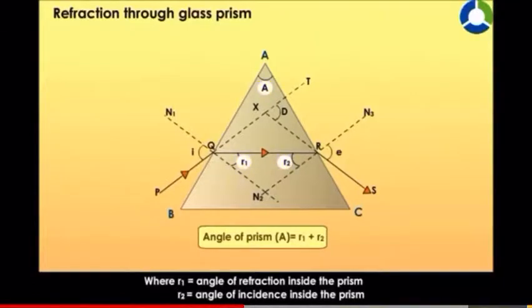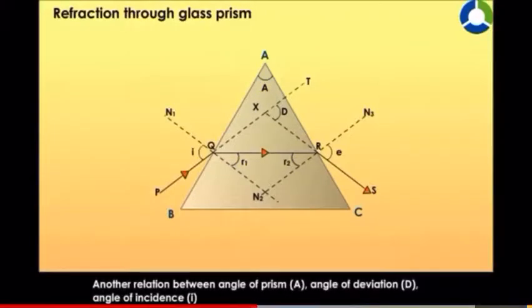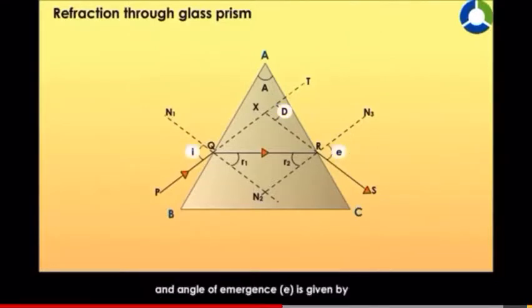equals the angle of incidence inside the prism. Another relation between angle of prism A, angle of deviation D, angle of incidence I, and angle of emergence E is given by A plus D equals I plus E.